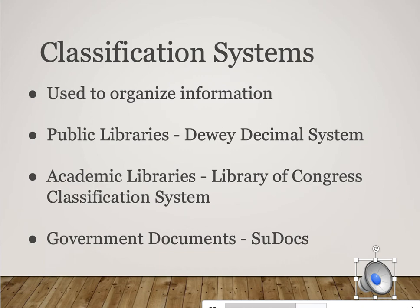Last but not least, the government has its own classification system for organizing documents it produces — anything from tax forms to reports on natural disasters or the education system. The government produces hundreds of thousands of documents a year and has to organize that information somehow. That system is called SUDOCS, short for the Superintendent of Documents classification system. This is the first and last time we'll talk about it, but it's important to know there is a totally separate third system for how the government organizes its information.